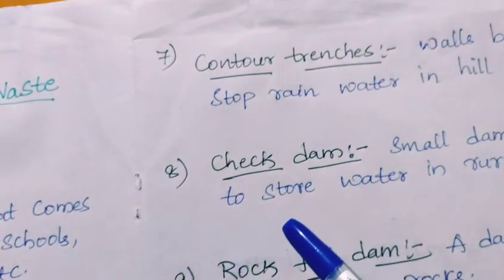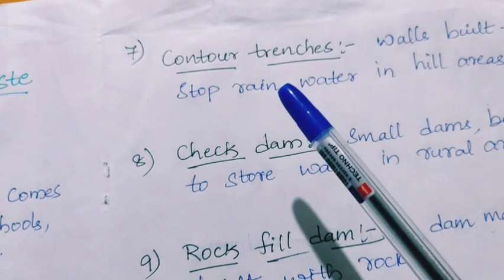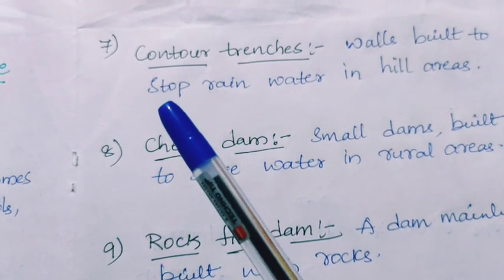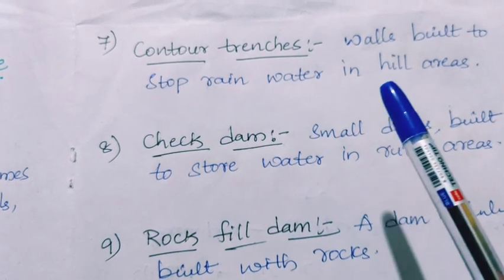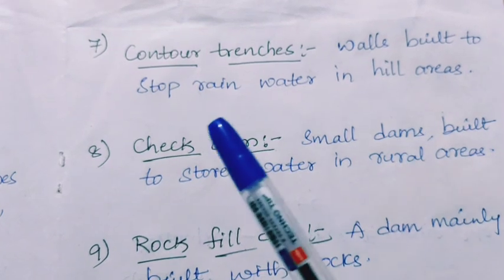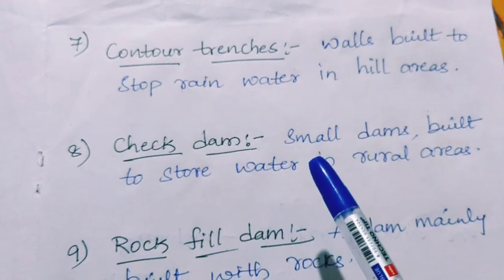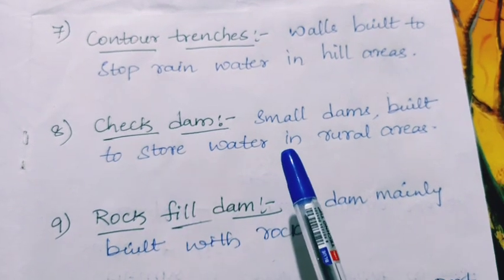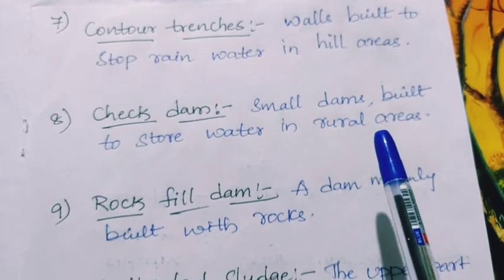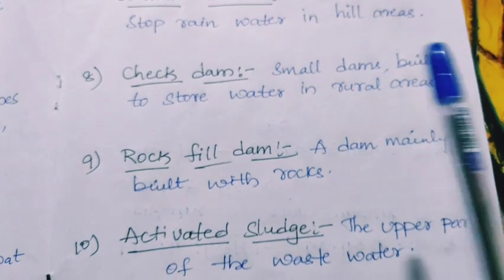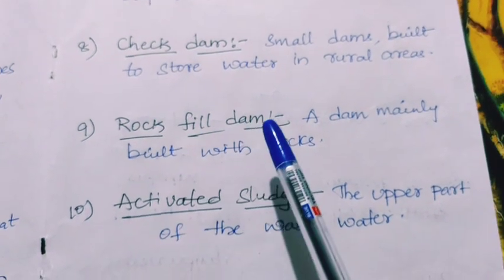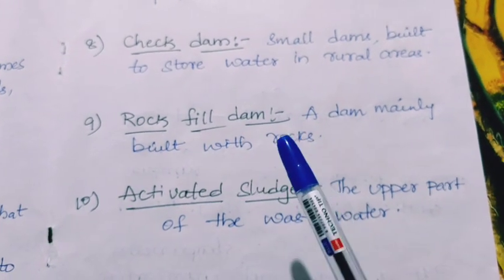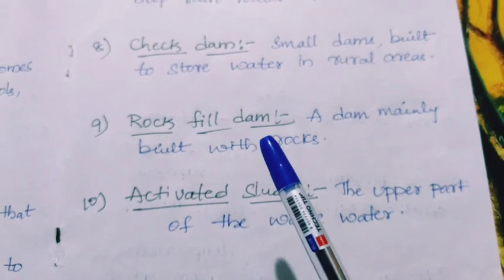Next, contour trenches — walls built to stop rainwater in hill areas. Check dam — check dams are the small dams built to store water in rural areas.